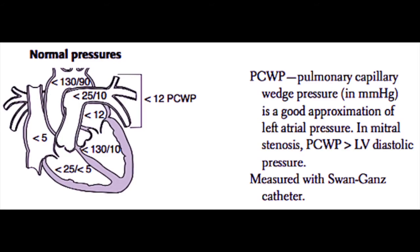In patients with mitral valve stenosis, the wedge pressure will actually be higher than the left ventricular end-diastolic pressure because of the inability of the blood to get into the left ventricle. So mitral stenosis can throw off your wedge pressure as an estimation of left ventricular diastolic pressure. The left atrial pressure is usually less than 12 millimeters of mercury. Left ventricular pressure ranges from approximately 130 systolic to 10 diastolic, and aortic pressure is usually less than 130 over 90 millimeters of mercury.